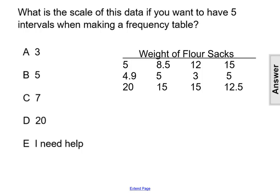we first have to find the range of the data using the maximum and minimum value. Within this data, we have a maximum of 20 and a minimum of 3. Our range will be the difference of the maximum and minimum, so 20 minus 3 gives us a range of 17.